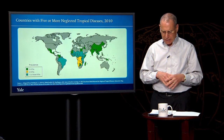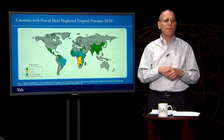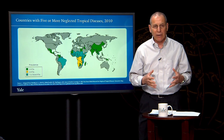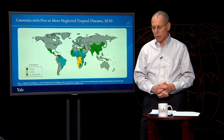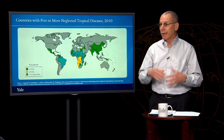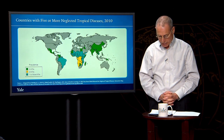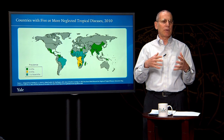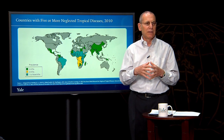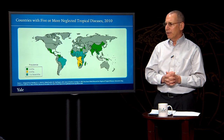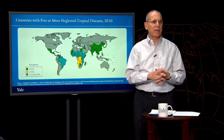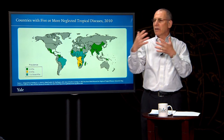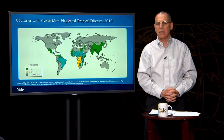It's been estimated, for example, that about 75% of school children in Rwanda are infected with soil-transmitted helminths, the so-called wormy diseases. Now, there are a number of reasons why the neglected tropical diseases have been so-called neglected. One of them is they affect such poor people who are often, out of sight and out of mind by other members in society.